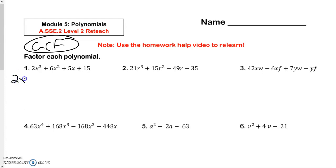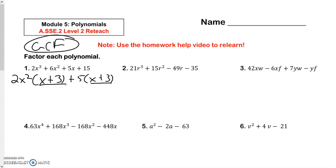I'm going to take out a 2 and x to the second. That's going to leave me with 2 divided by 2, and 3 minus 2 is just going to leave me with an x. Bring down the plus — 6 divided by 2 is going to leave me with 3, and the x to the second cancels out. The next two, I see that I could take out a 5, so I'm going to put a plus 5. I'm going to get an x, and 15 divided by 5 is a 3. If I did it correctly, these two match. I take the 2x to the second plus 5, and then I only take one of the x plus 3s.